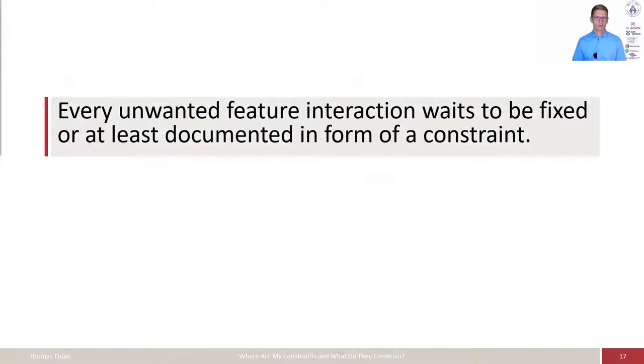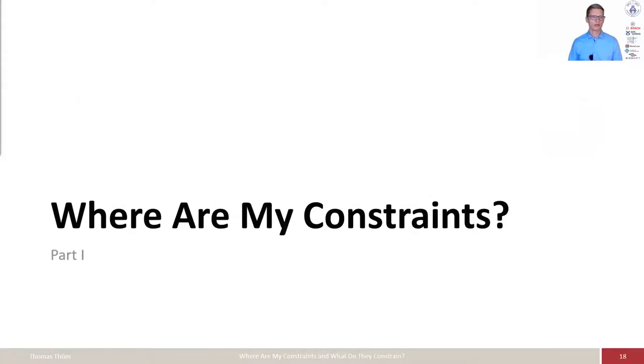There's some bottom line behind all those: every unwanted feature interaction waits to be fixed or at least documented in form of a constraint. When we talk about software product lines or system product lines, we typically want to aim to fix that, but that's not always possible, and in these cases, at least we want to document it. Now we finally arrived at the question, where are my constraints?